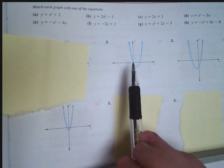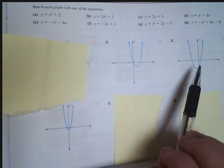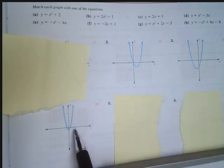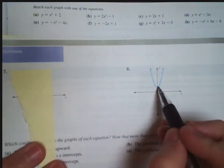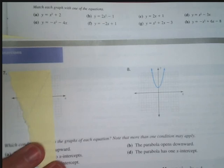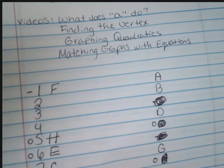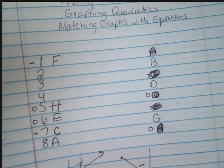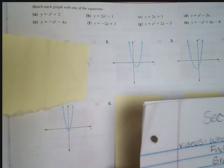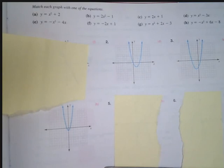But if we look at number eight that does cross at about a two. So number eight is going to match A. So we're done with that page.